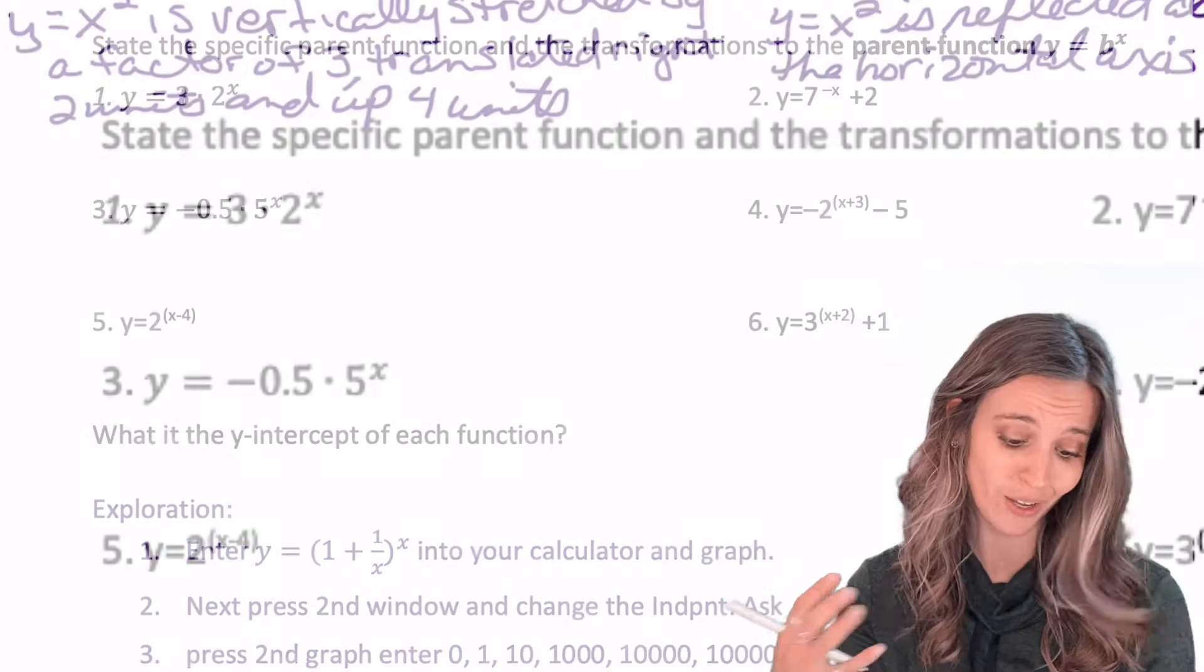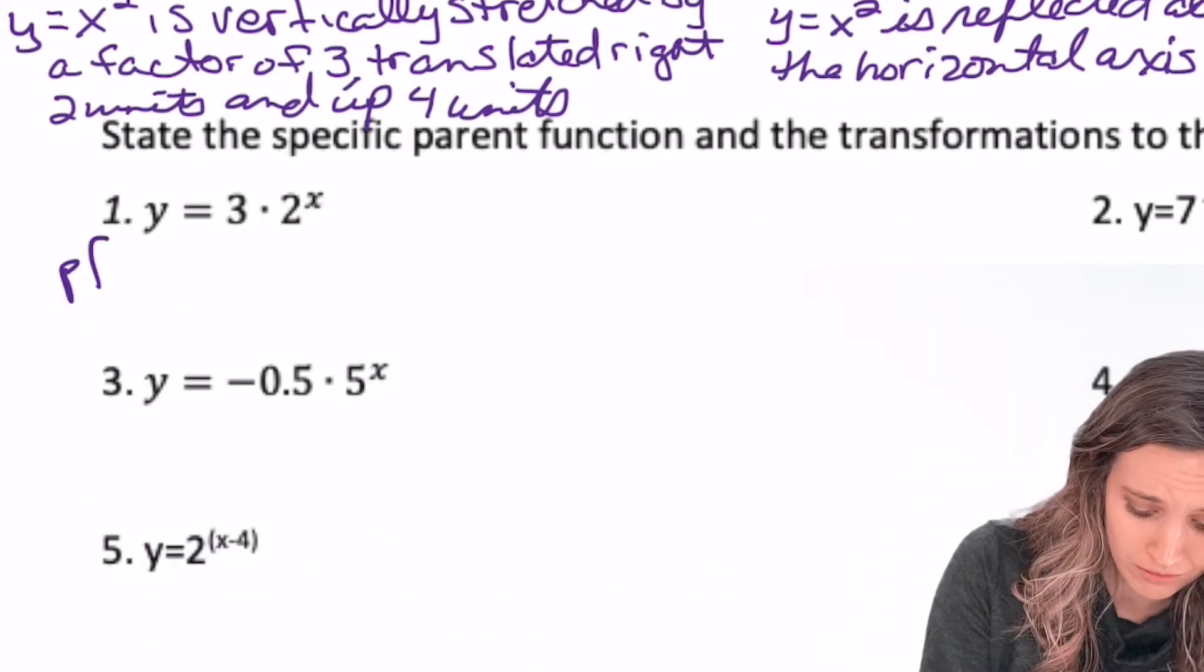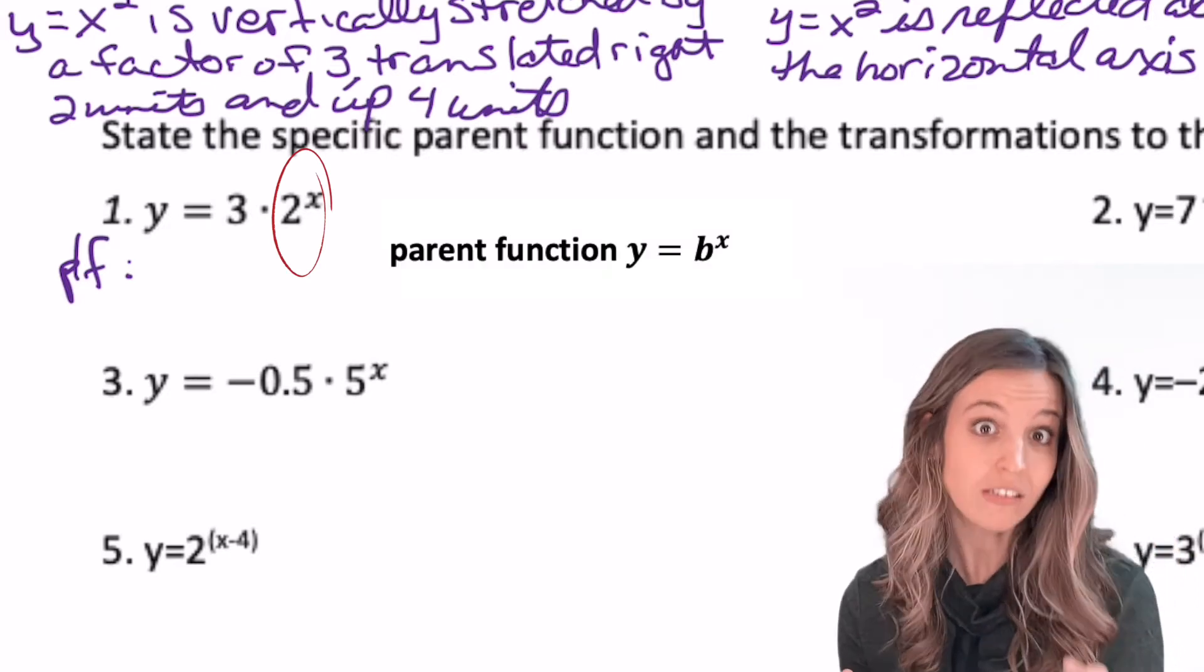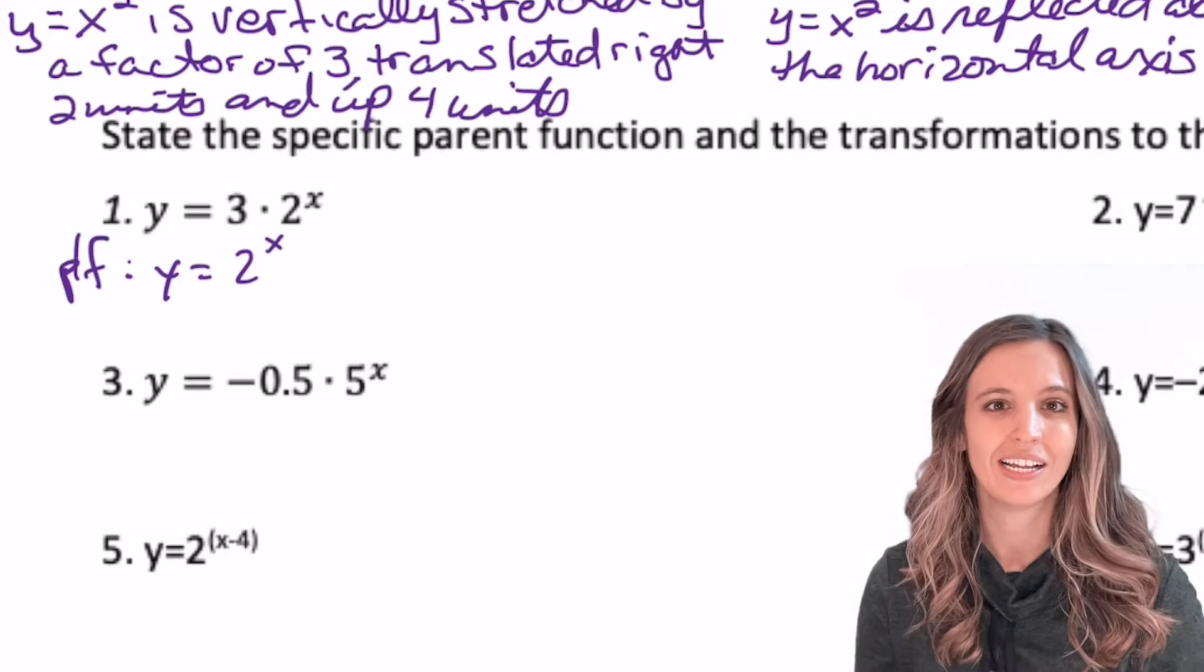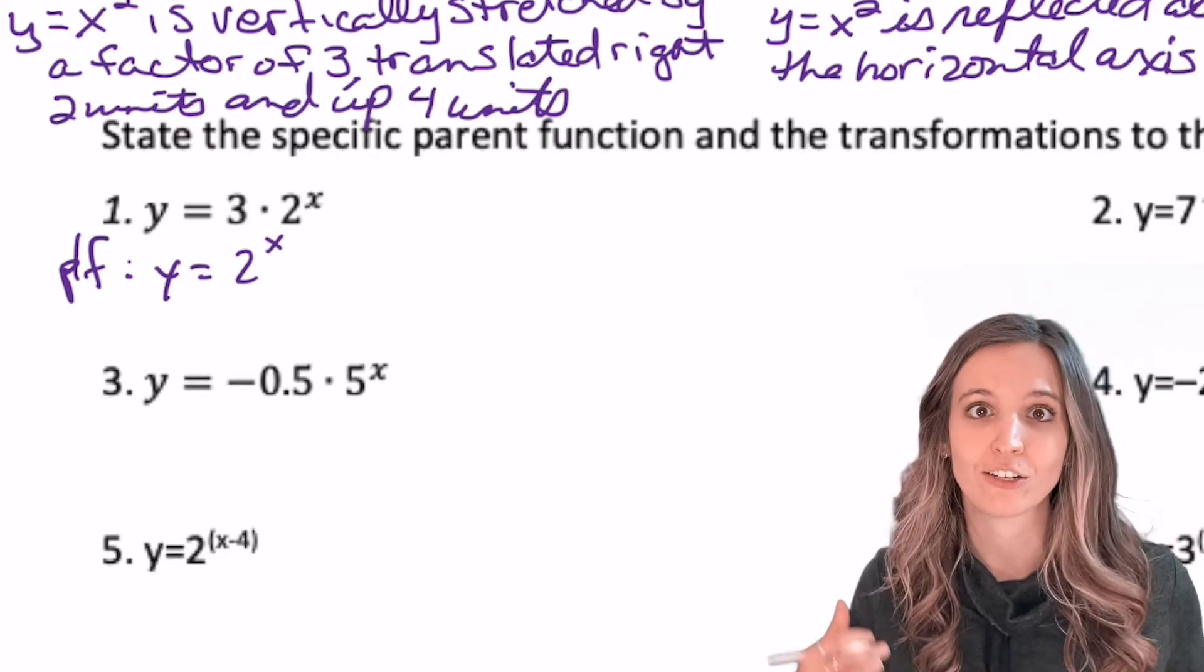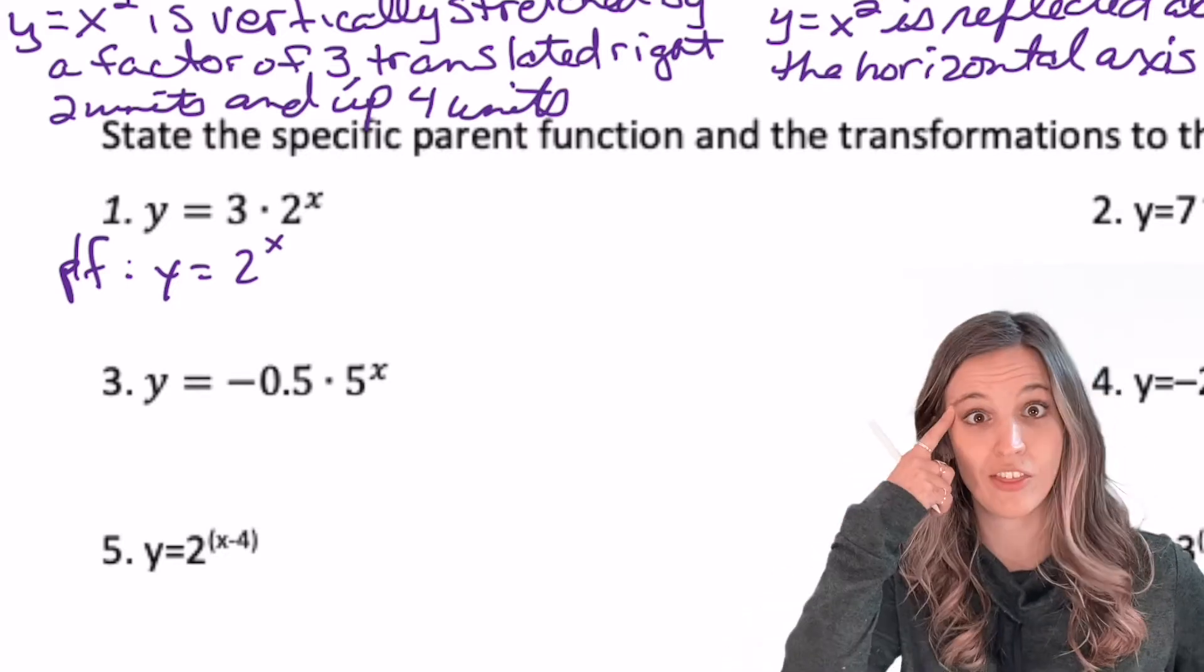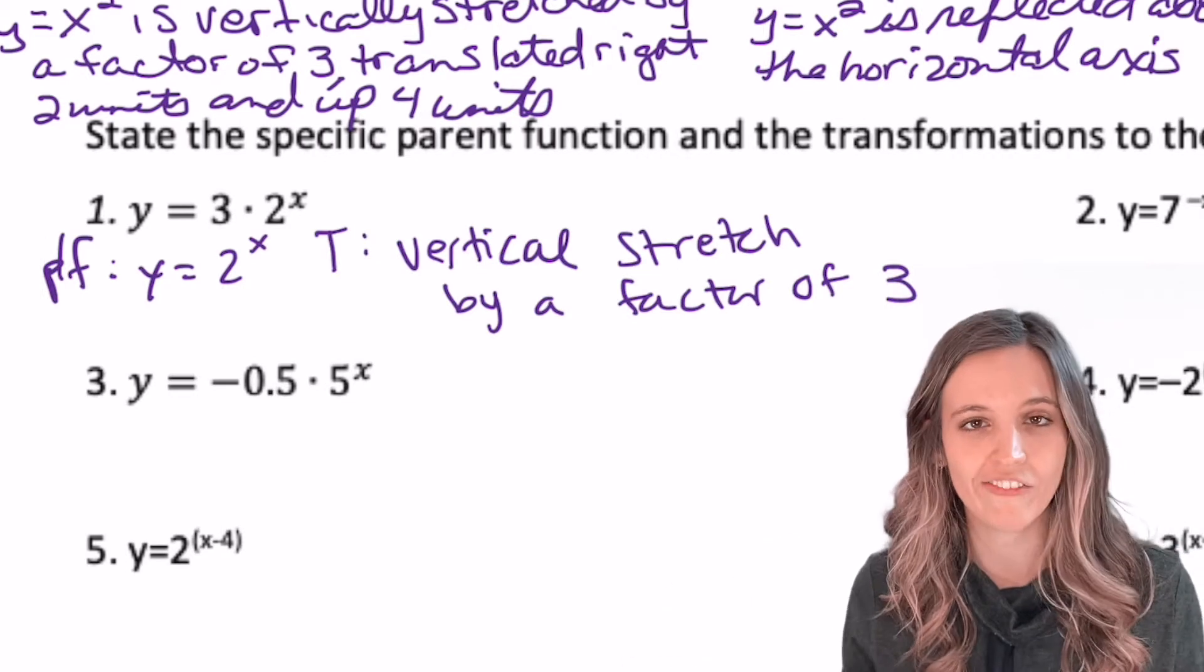So we have y equals 3 to the 2x power, so parent function 2 to the x, base to the power of x, y equals 2 to the x for my parent. Now it's being multiplied by a factor of 3. Factor, I'm thinking vertical stretch by a factor of 3.